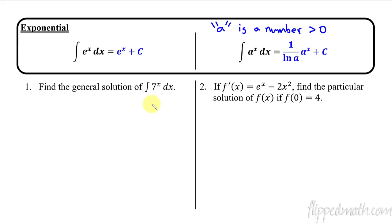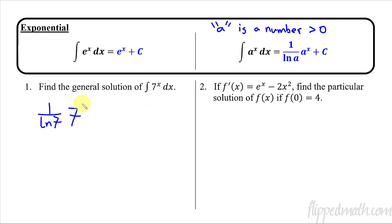So let's find the general solution for the first example. We just follow the pattern: the answer is going to be 1 over the natural log of 7, times 7 raised to the x, and then plus c for the general solution. Remember, this is the antiderivative, not the derivative — that's when you have the 1 over.